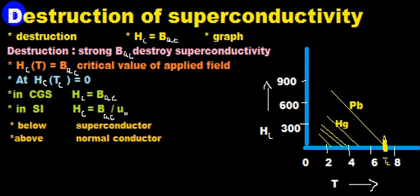Assalamualaikum warahmatullahi wabarakatuhu. My lecture is about the destruction of superconductivity from the Kittel book. I will discuss the destruction where HC equals BAC and a graph. A strong applied critical magnetic field, where the subscript C indicates critical and A indicates applied, can destroy the superconductivity.